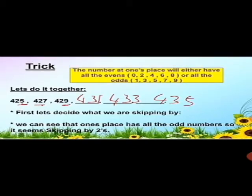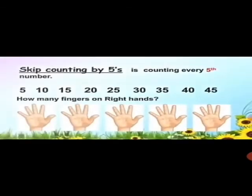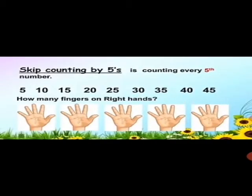Now class, tell me how many hands do you have. Yes, you have 2 hands, and one hand has how many fingers? One hand has 5 fingers. So we are going to do skip counting by 5s. Skip counting by 5s means counting every 5th number. You can see here: 5, then counting 5 more gives 10.